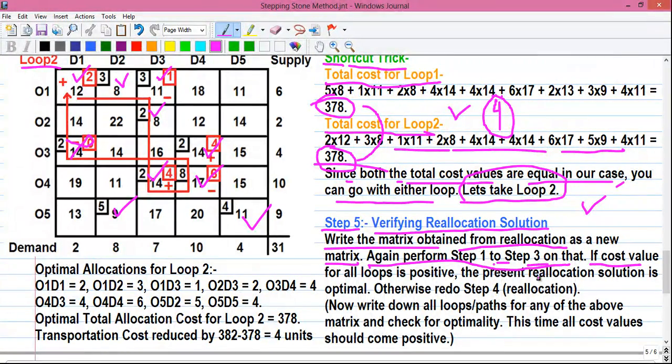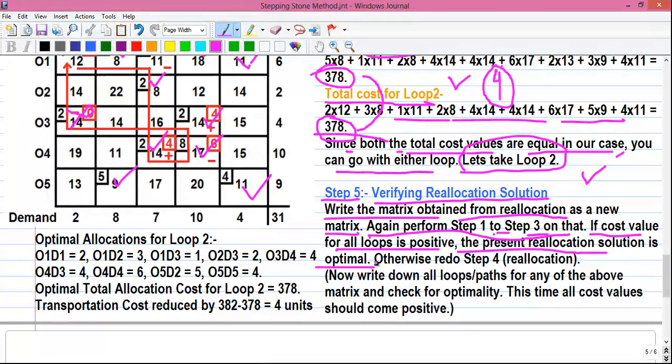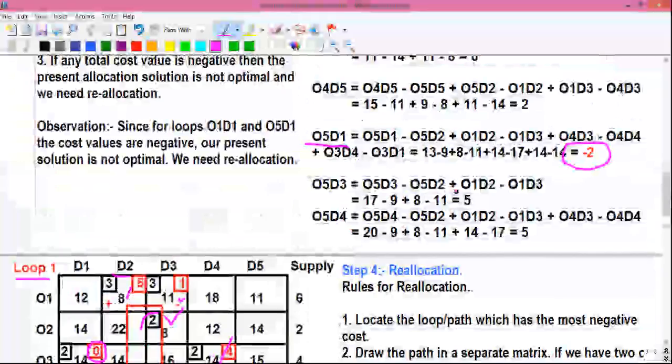So in optimality test if the cost value for all loops are positive then the present reallocation solution is optimal. So in our question if you write down this matrix and write down all the loops associated with all unoccupied cells, you will see all the values are positive. So if all the cost values are positive the present solution or present reallocation solution is optimal. Otherwise redo step 4, that is redo the reallocation. For our question write down all the loops path for any of the above matrix. Since both the values are same, you can go with either matrix and check for optimality. This time all cost values should come positive. Previously we had two negative cost values.